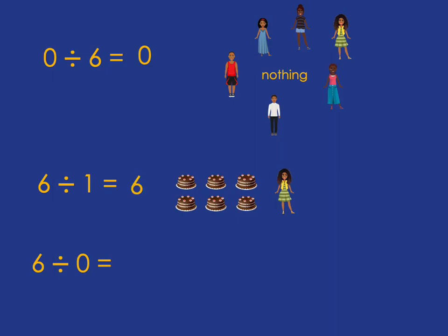Now, what about 6 divided by 0? This is a really funny one. Here, you've got 6 cakes, and then what you're saying is you've got no people who need to share the cakes. How many is each person going to get, but there's no people?